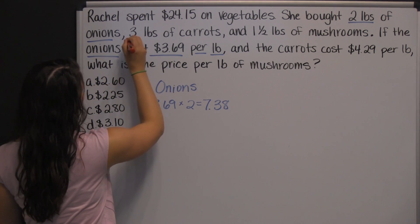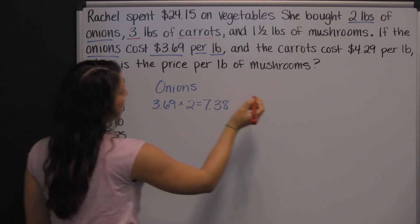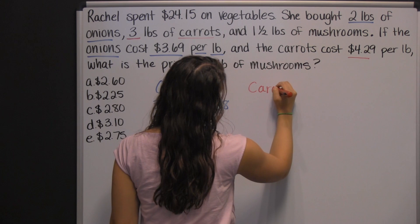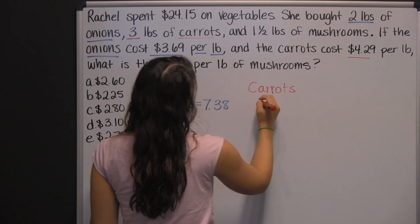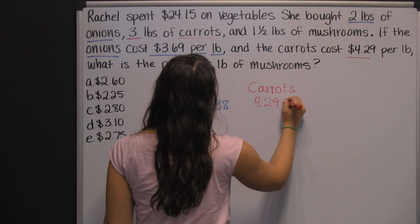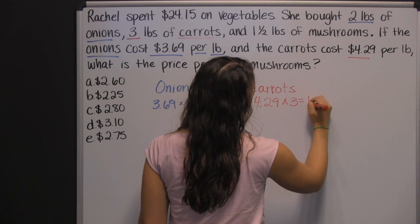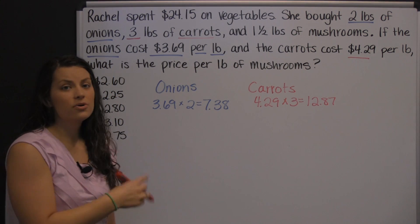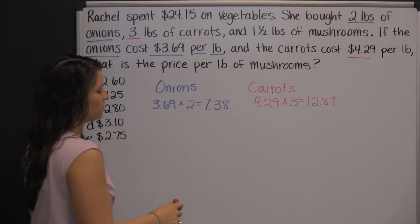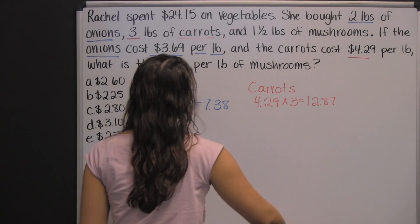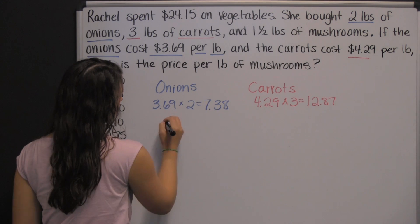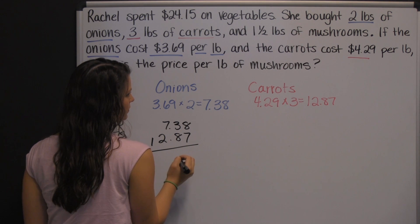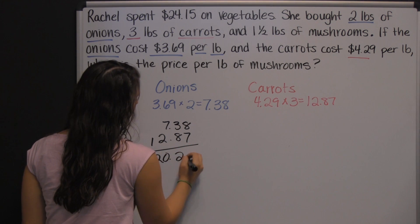Her carrots — she bought three pounds of those, and they were four dollars and twenty-nine cents per pound. So her carrots were four twenty-nine for each pound, and she bought three pounds of those, so that was twelve dollars and eighty-seven cents. Now let's add those together to find the total amount she spent on onions and carrots: seven thirty-eight plus twelve eighty-seven, which is twenty dollars and twenty-five cents.